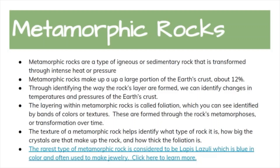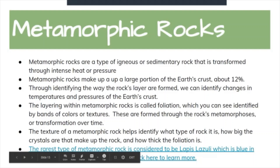Foliated metamorphic rocks such as gneiss, phyllite, schist, and slate have a layered or banded appearance produced by exposure to heat and directed pressure, whereas non-foliated metamorphic rocks such as hornfels, marble, quartzite, and novaculite do not have a layered or banded appearance. Pictures and brief descriptions of some common types of metamorphic rocks will be shown.